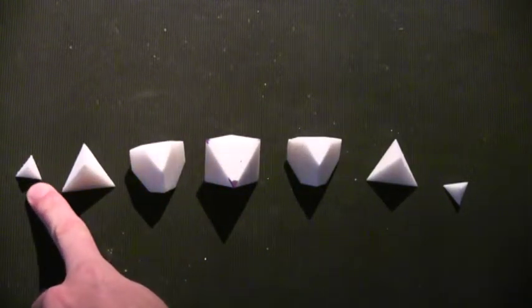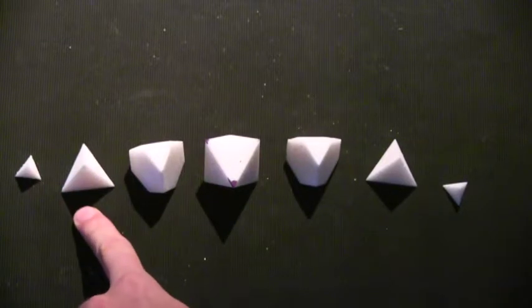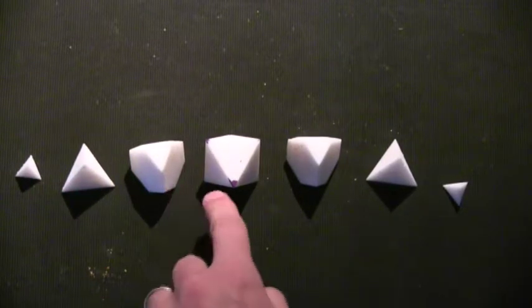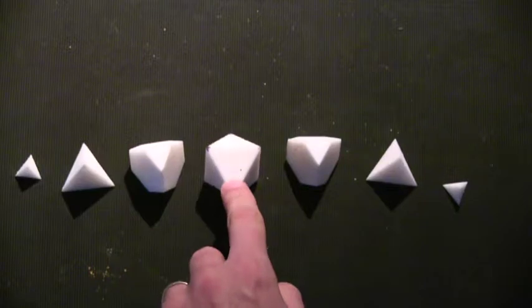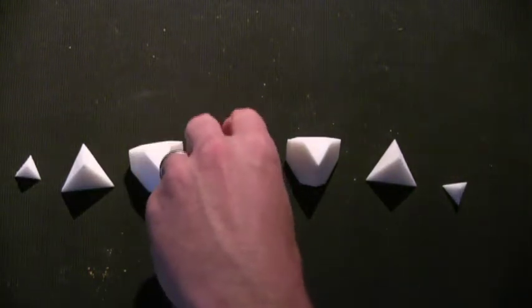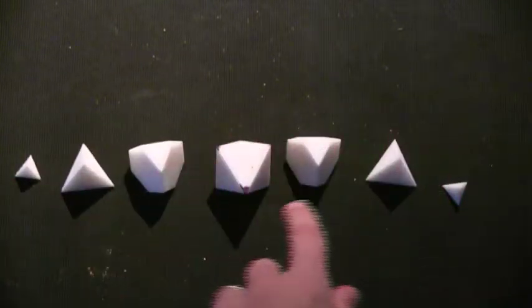First you got a tetrahedron, a tiny one, then a bigger tetrahedron. Then the tetrahedron started deforming. And right in the middle, what did you get? An octahedron.